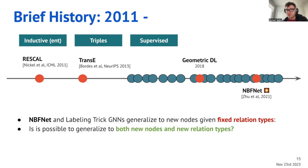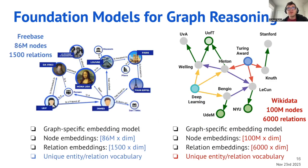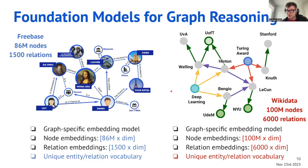That's the main question we undertook in this new work: is it generally possible to generalize to both new nodes and new relation types? This leads to the design of foundation models, because the graphs have very different structures. In Freebase's biggest version you have about 90 million nodes and 1,500 relations; in Wikidata you'd have 100 million nodes and 6,000 relations — very different cross structures and relation types.